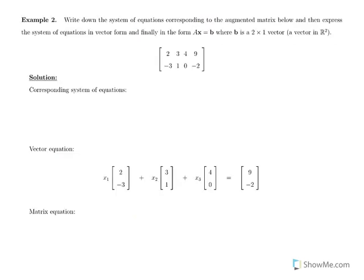In Example 2, we write the system of equations corresponding to an augmented matrix, then express it in vector form, and finally in the matrix form AX equals B, where B is a vector in R2 and X is a 3×1 vector with entries X1, X2, X3.